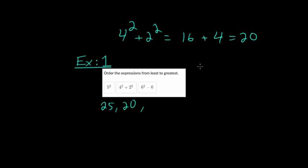And then this last one, 6 squared minus 6, we do the exponents first, so 6 times 6 is 36, and now we can do subtraction, so we get 30.